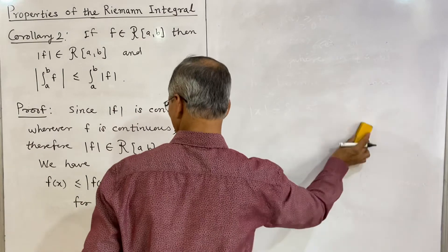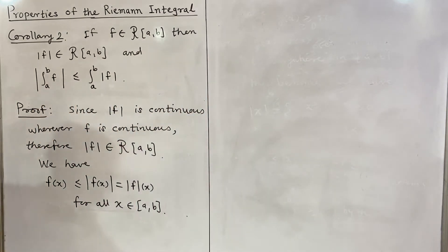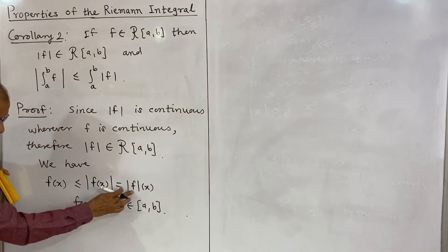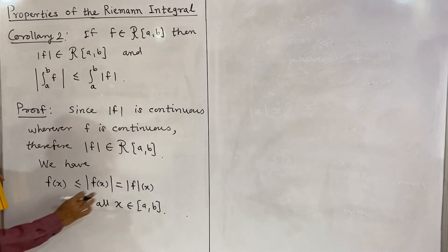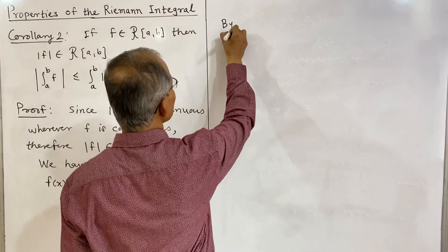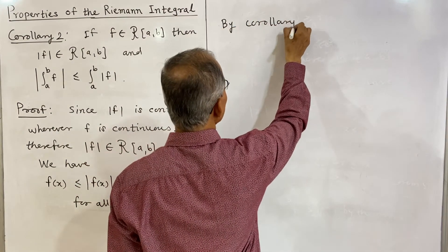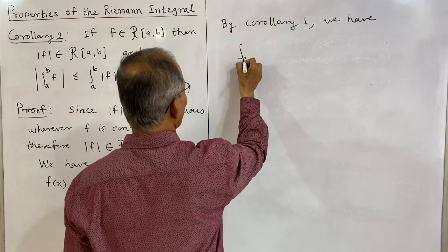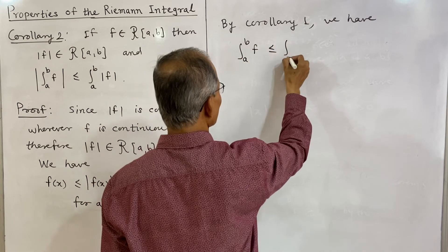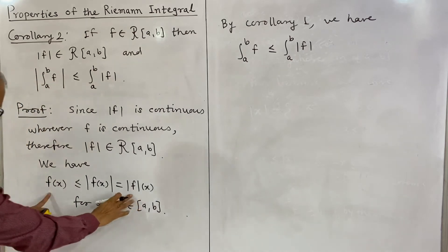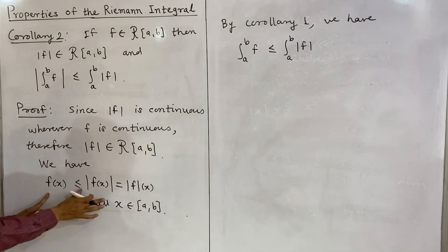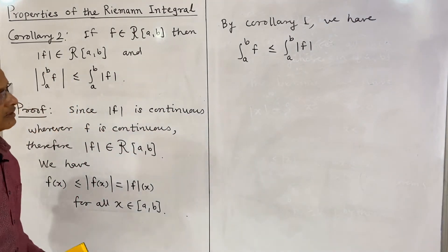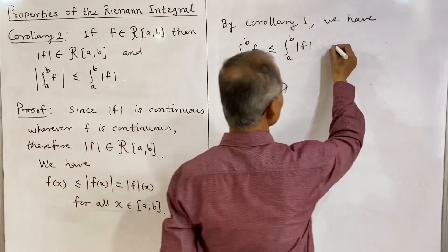Therefore by the earlier corollary, since f(x) ≤ |f(x)| for all x in [a, b], the integral of f ≤ the integral of |f|. So by corollary 1, the integral from a to b of f is less than or equal to the integral from a to b of |f|. We note this as result 1.